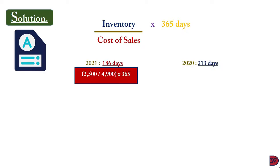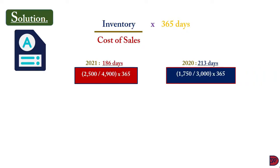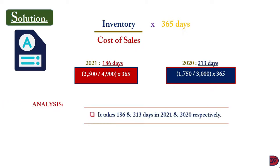For 2020, the inventory days will be 213. That was achieved by dividing the inventory of $1,750 by cost of sales of $3,000, multiplied by 365. On the face of it, the inventory days improved from 213 in 2020 to 186 in 2021. You can also see that the cost of sales increased at a higher rate than the increase seen in inventory, which can account for the decrease in inventory days.